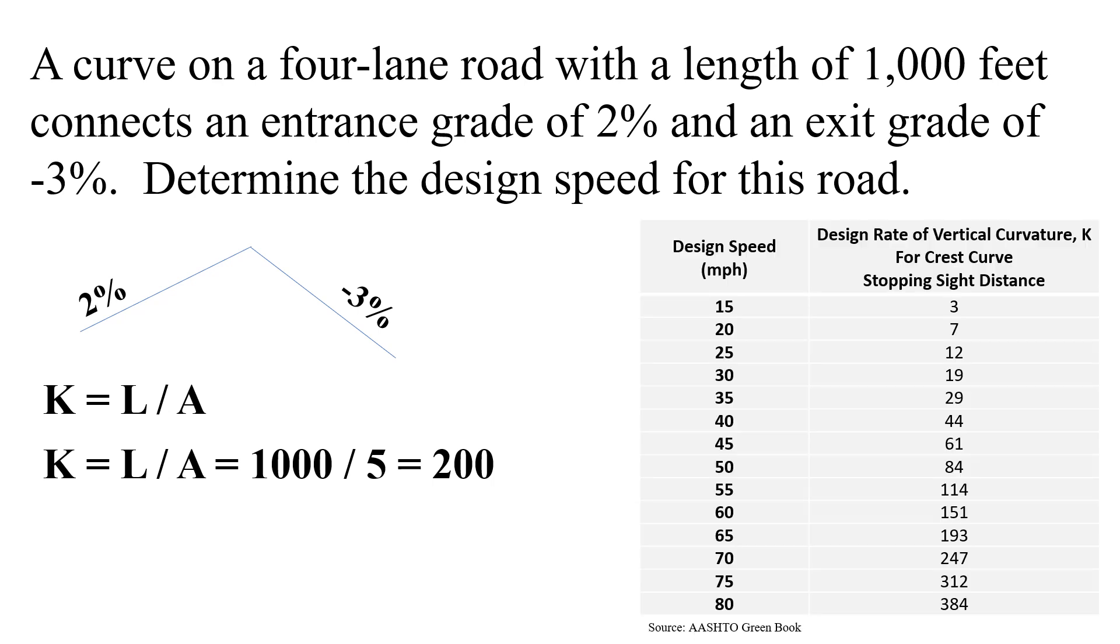We can use the AASHTO green book table for crest vertical curves rate of vertical curvature for stopping sight distance. We know it's got to be stopping sight distance because it's a four-lane road so passing sight distance isn't going to apply here.